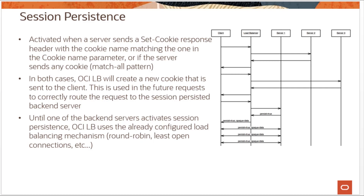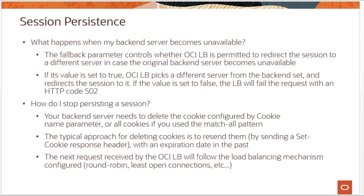Regarding fallback: by default, the load balancing service directs traffic from a persistent session client to a different back-end server when the original server is unavailable. You can configure the back-end set to disable this fallback behavior, but when you do, the load balancer will fail the request and return HTTP 502. The service continues to return HTTP 502 until the client no longer presents a persistent session cookie. When the server becomes unavailable, the fallback method is controlled by the configured value, and the load balancer can pick a different server from the back-end set and redirect the sessions to it.